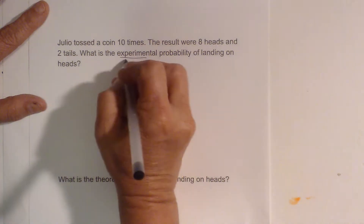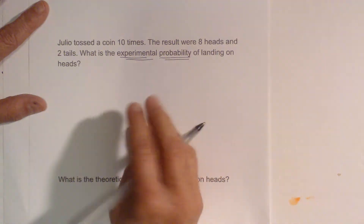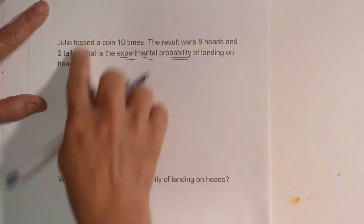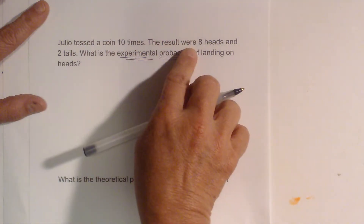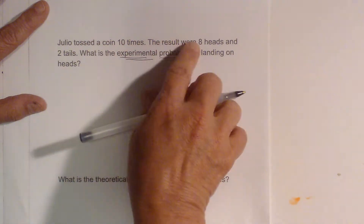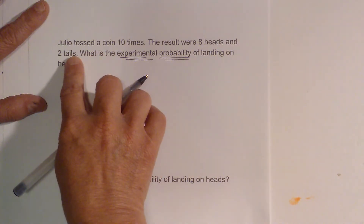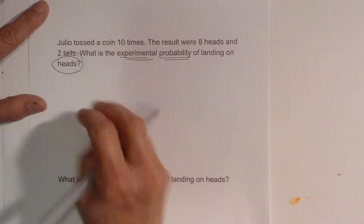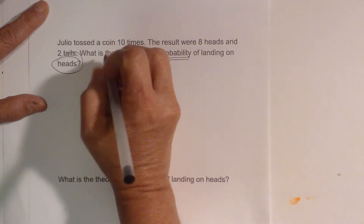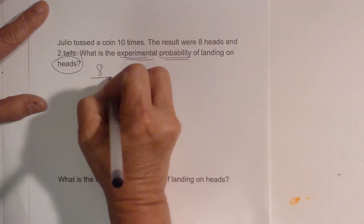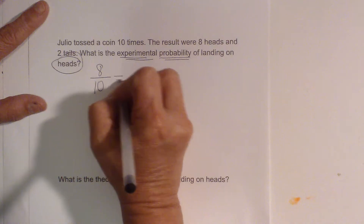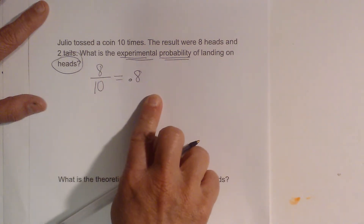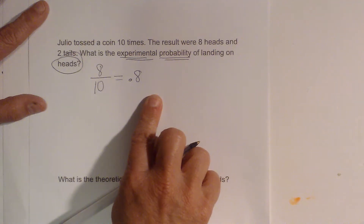Let's first define what experimental probability is. Experimental probability is the results you get from doing the experiment. So the experiment was ten flips — eight were heads, two were tails. What is the probability of getting heads? Well, we got eight of them — eight out of ten — so that is 0.8, which is eight tenths. And that's the experimental probability.